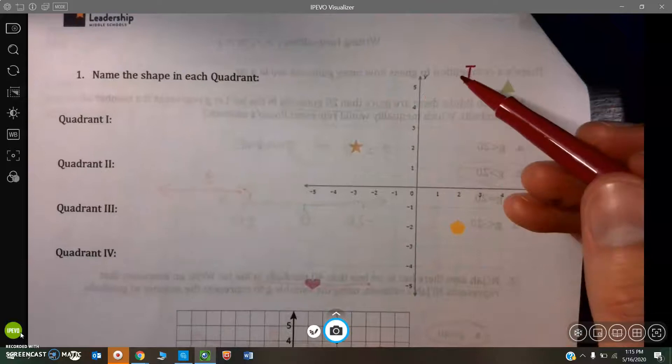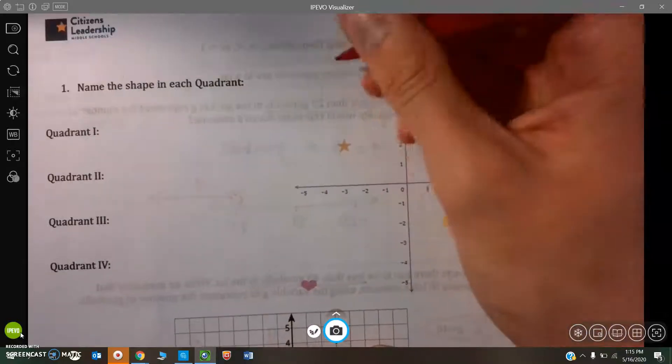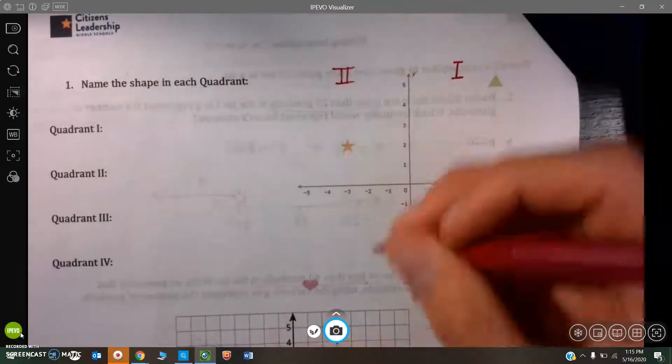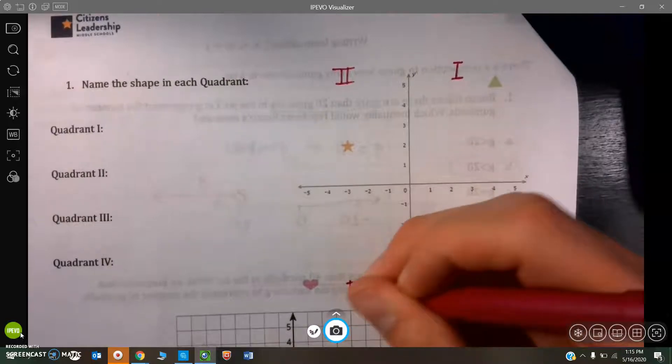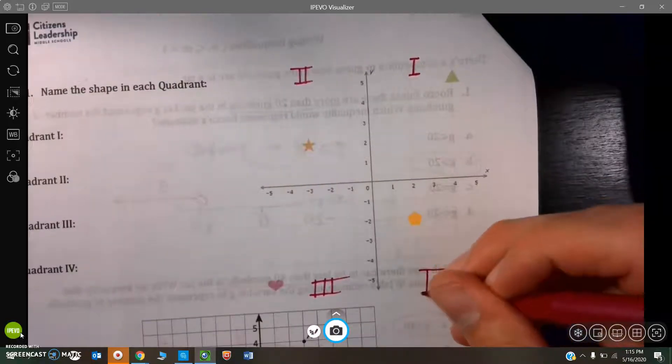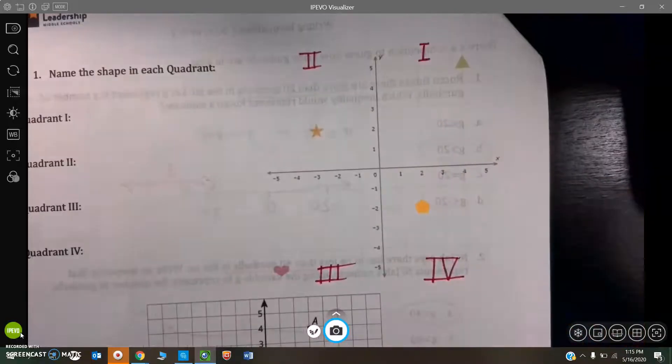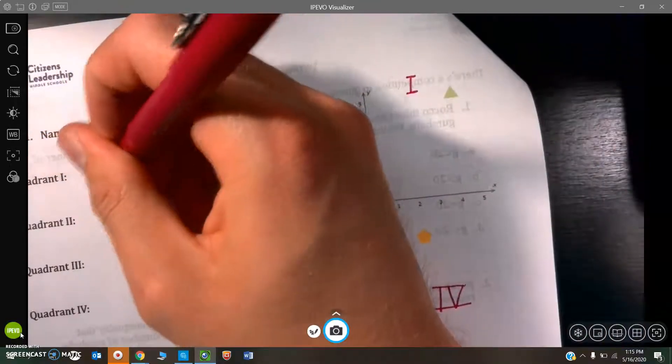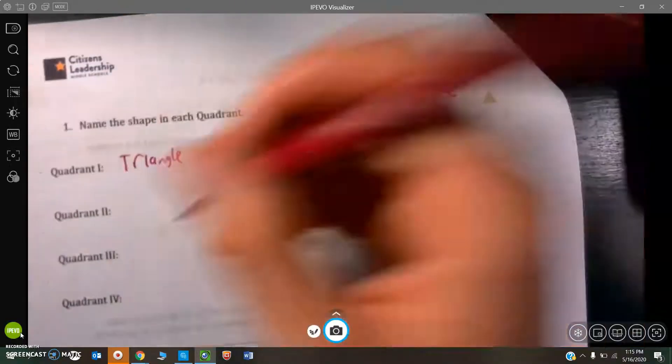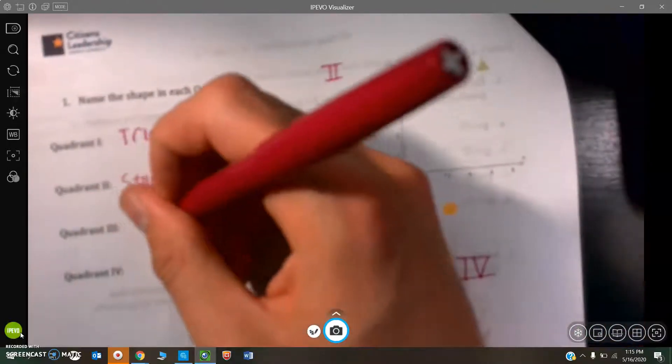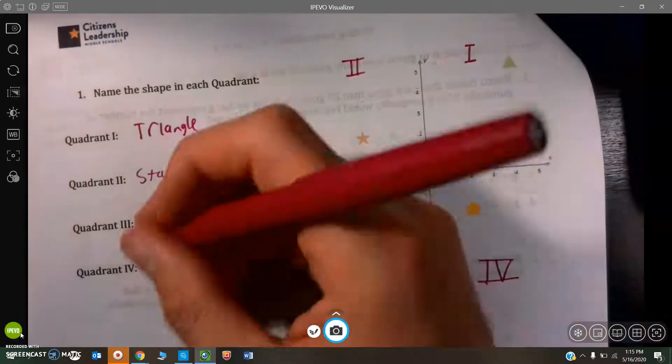It does count counterclockwise. So, the opposite of a way a clock would work. If you were looking at a clock, it would go one, two, three, four, five, six. So, it counts this way. Counterclockwise means it goes backwards this way. So, this would be two. This would be quadrant three. And this would be quadrant four. Quadrant one has the triangle. Quadrant two has the star. Quadrant three has the heart. And quadrant four has the pentagon.